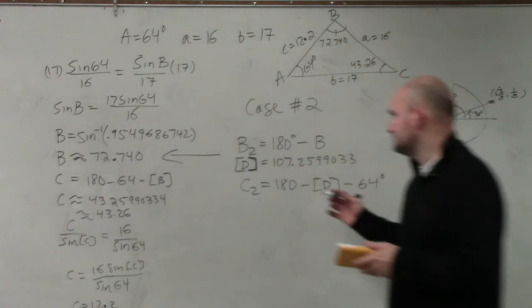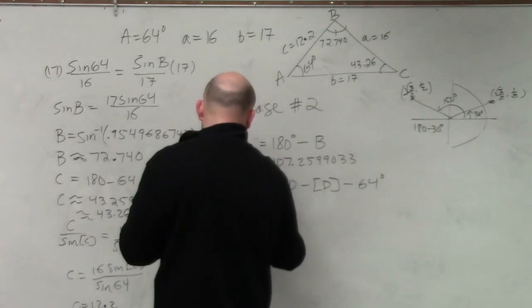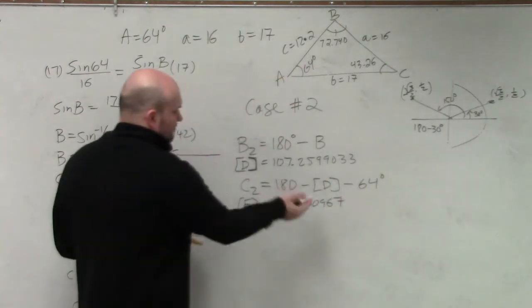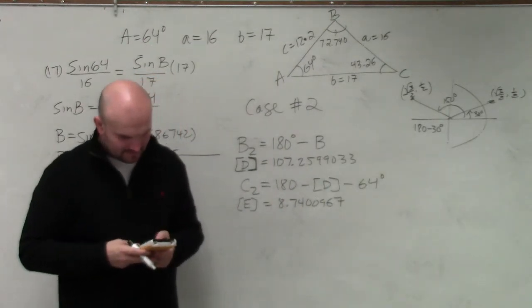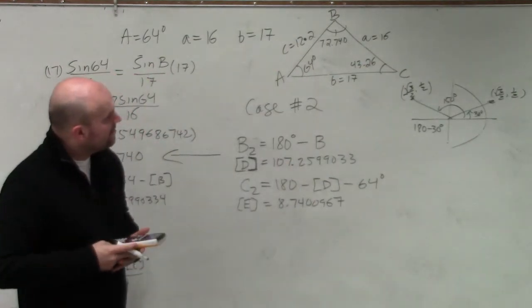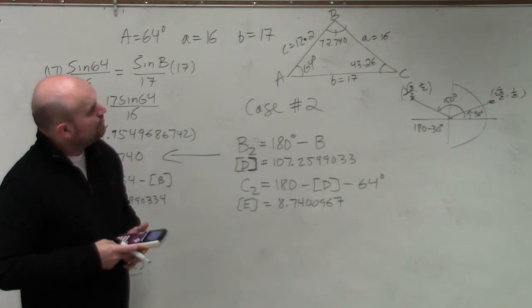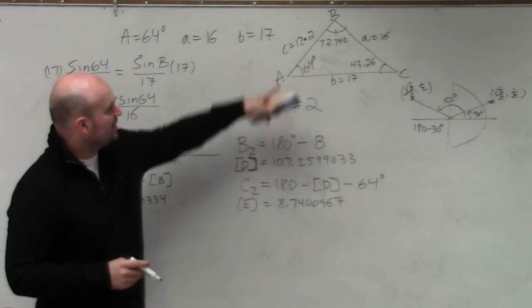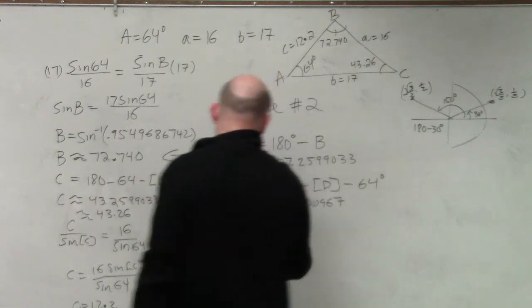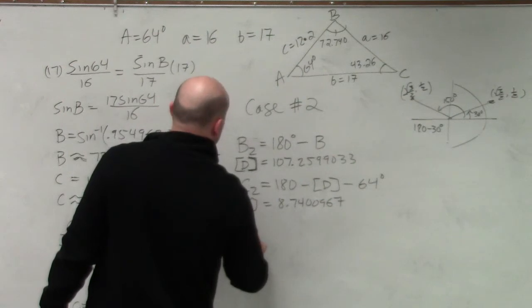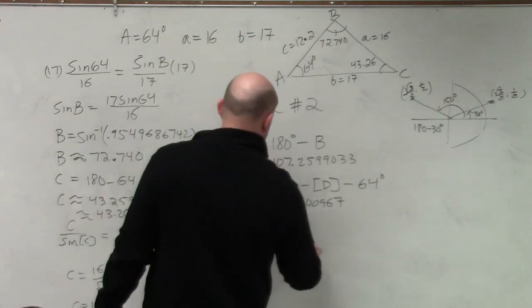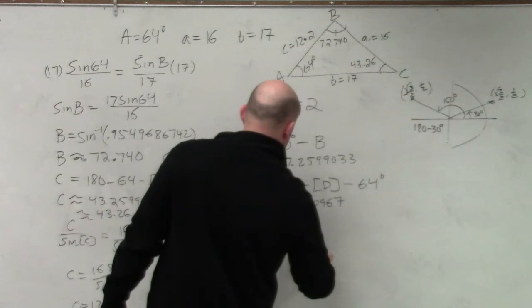And I get 8.7. And I'm going to call that E. And I'll store that as alpha E. Which in reality, that is my second angle for C. Then, what I have here is, now I just need to figure out what my new C2 is. So I need to go ahead and create another ratio, which would be 16 over the sine of 64 is equal to C over the sine of E.